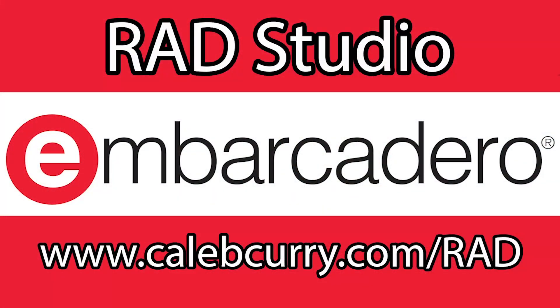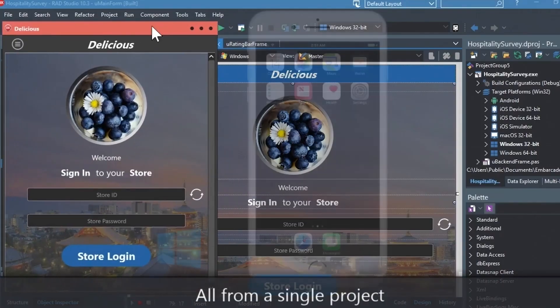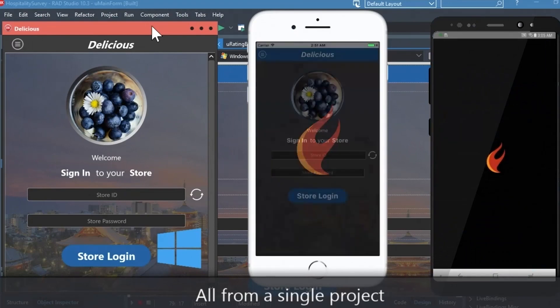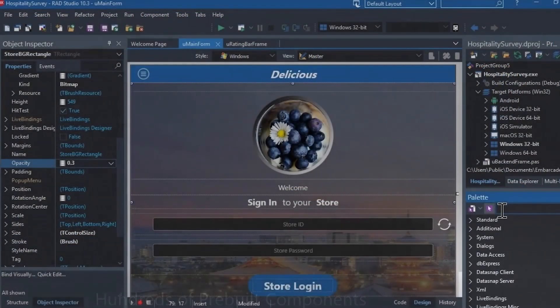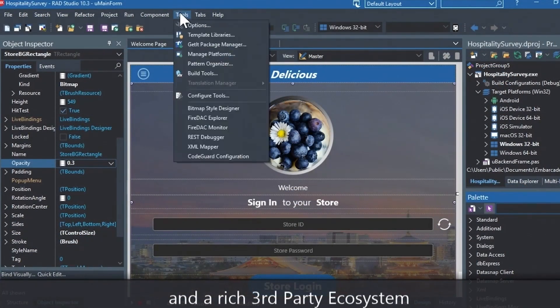Rad Studio is the IDE of choice for C++ development. Quickly build native, mobile, and desktop applications from a single C++ code base and deploy to Windows, Mac, iOS, and Android. With Rad Studio, user interface design has been made easy with hundreds of pre-built components for cross-platform development.